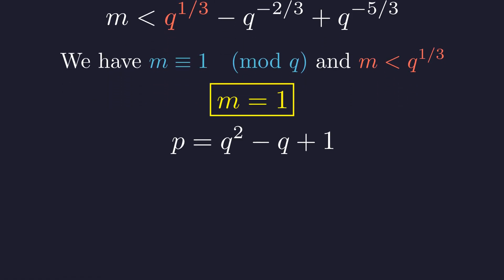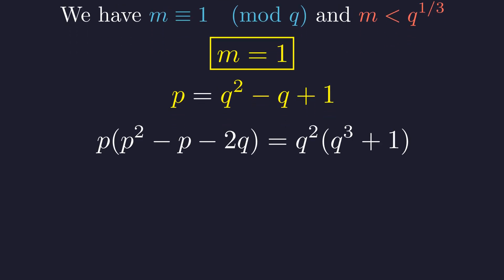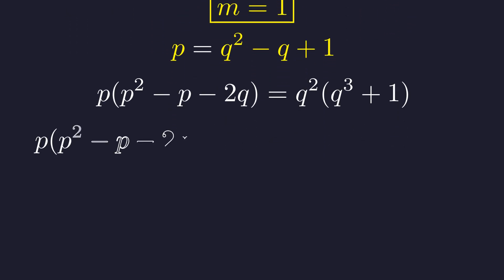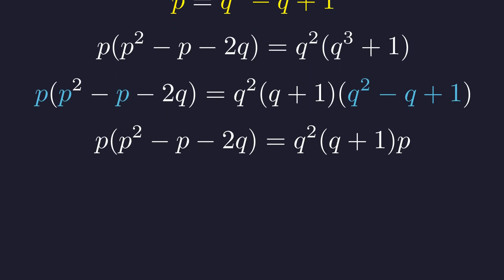Substituting m equals 1 back into our equation for p provides a direct formula for p in terms of q. With this direct relationship established, we can now substitute this expression for p back into our main factored equation to solve for q. Let's return to our factored equation. We factor the q cubed plus 1 term. Now, we can substitute p for q squared minus q plus 1 on the right side. This substitution simplifies the equation.